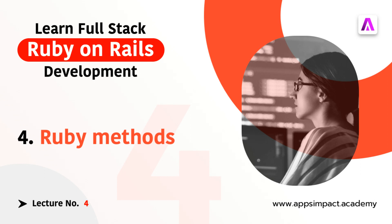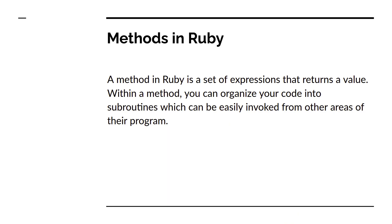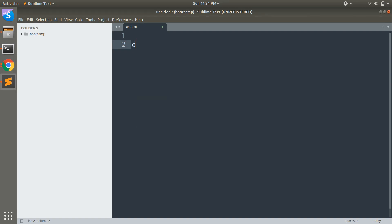So let's discuss what methods are. In general, or in programming, methods can be considered as a function, and a function is a block where you can write some executable statements that can be used inside the program over time. A method in Ruby is a set of expressions that returns a value. Within a method you can organize your code into subroutines which can be easily invoked from other areas of the program.